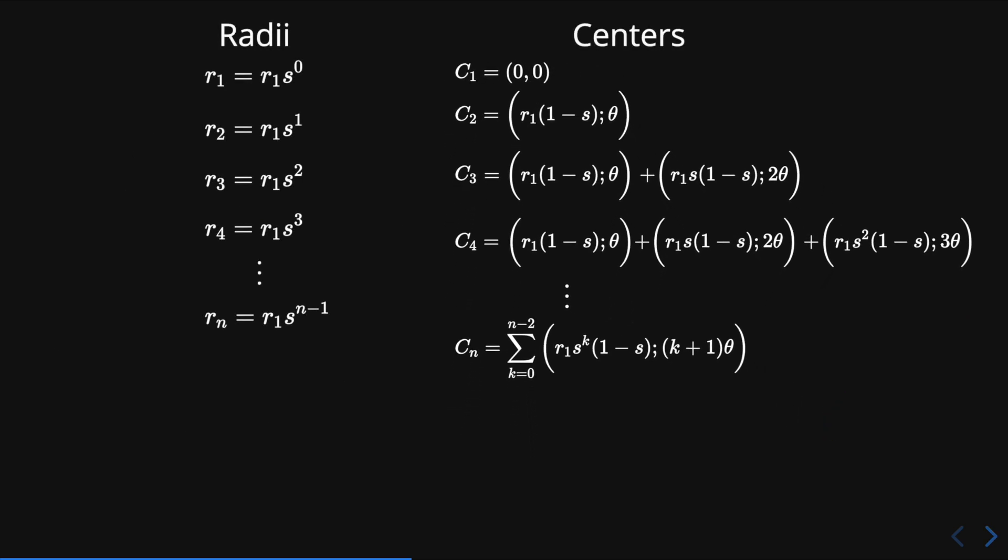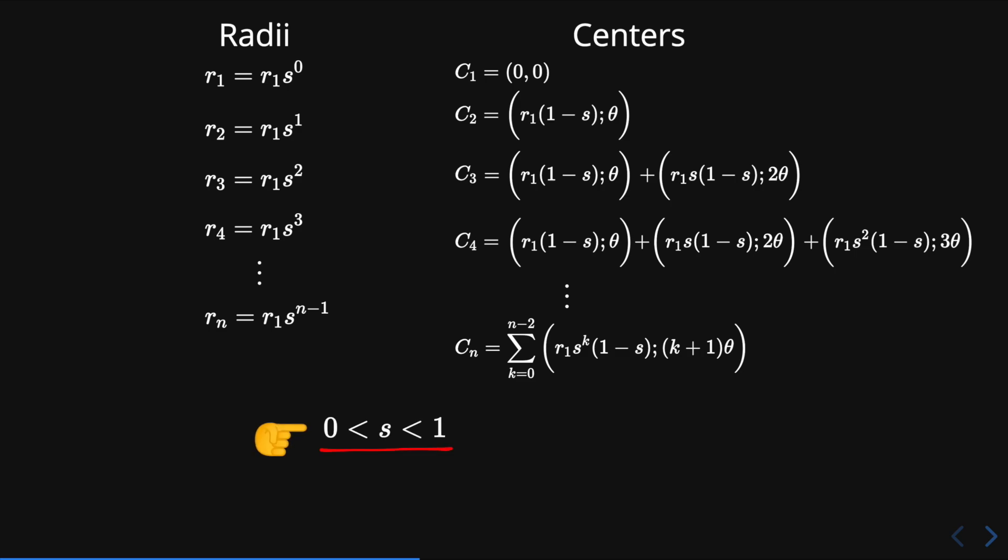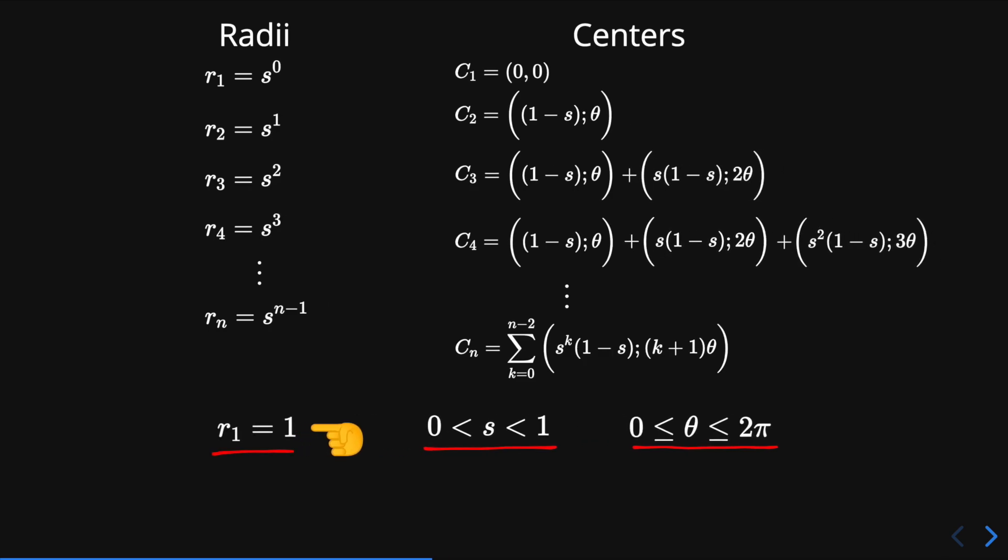Thus we have obtained the radius and center of each circle, where s is greater than 0 and less than 1, and theta is between 0 and 2 pi. We can also assume that r1 is equal to 1 to simplify the expressions.